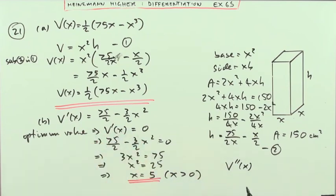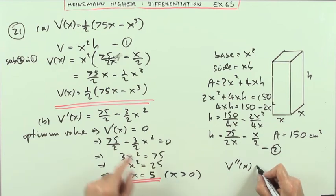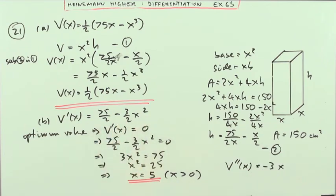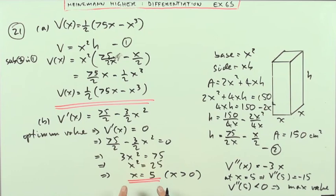So that at x equals 5, that means this derivative is going to be negative 15, which is quite clearly negative, so it's a maximum. So V''(5) is less than 0, which means you've got a maximum value. So you've got a maximum value at x equals 5.